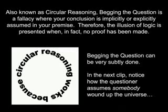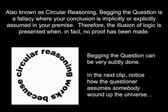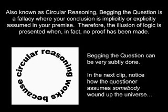Begging the Question. Also known as circular reasoning, begging the question is a fallacy where your conclusion is implicitly or explicitly assumed in your premise. Therefore, the illusion of logic is presented when in fact no proof has been made. Begging the question can be very subtly done. In the next clip, notice how the questioner assumes somebody wound up the universe.